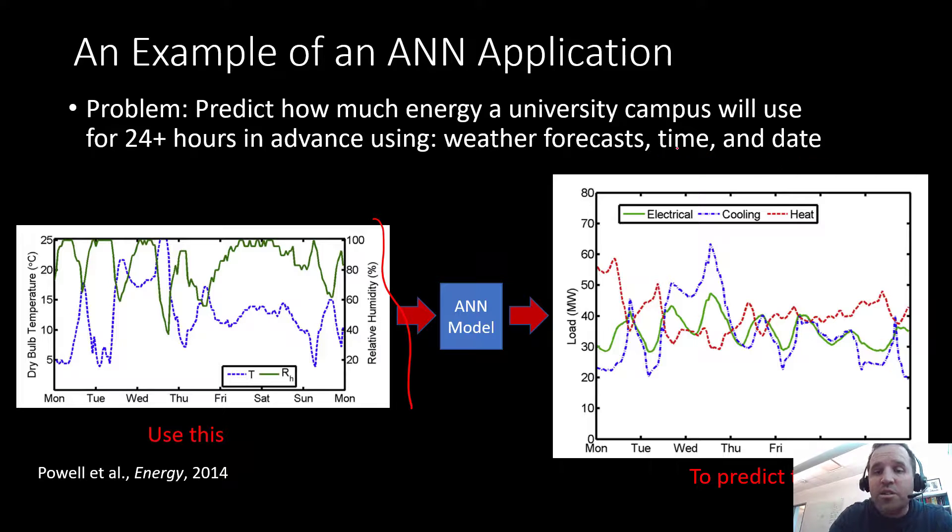And those things can be used as surrogates for if people are out occupying those buildings and using the buildings. So you can see there, it's pretty difficult with the human brain to say, okay, if my humidity looks like this, then my heating load is going to look like this. This isn't obvious to us. But this is the real data as collected in this example.